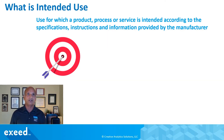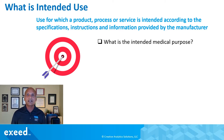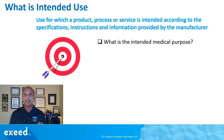Let's look at how ISO defines intended use. It's a use for which a product, process, or service is intended according to the specifications, instructions, and information provided by the manufacturer. It's a pretty straightforward definition. What is the intended medical purpose — is it a diagnostic device, does it treat a long-term disease, or does it mitigate symptoms? Whatever it is used for, you need to define that.